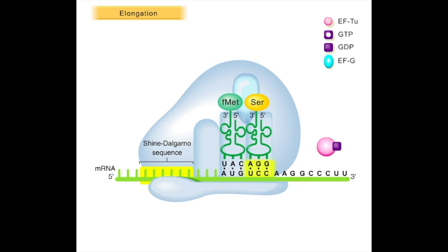Upon binding, the GTP is hydrolyzed and EF-TU is released and recycled. With a tRNA in both the P and A sites, a peptide bond can form between adjacent amino acids.